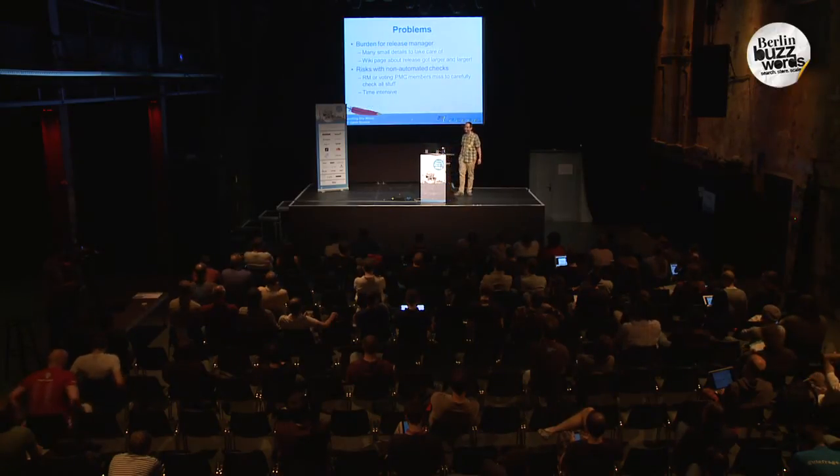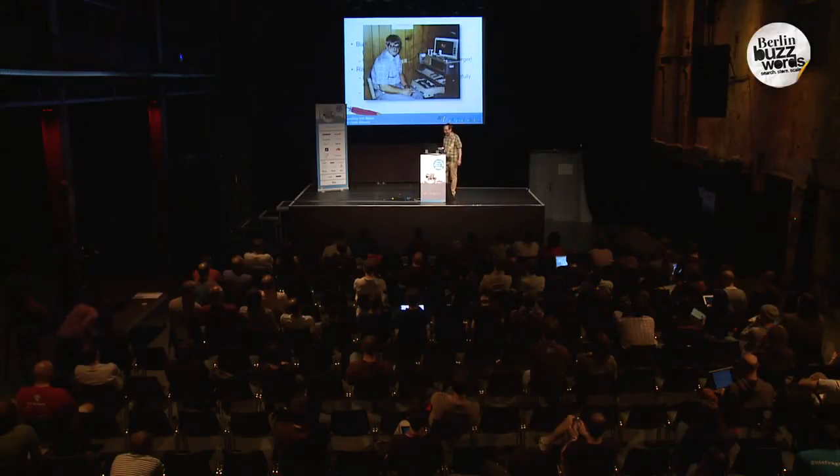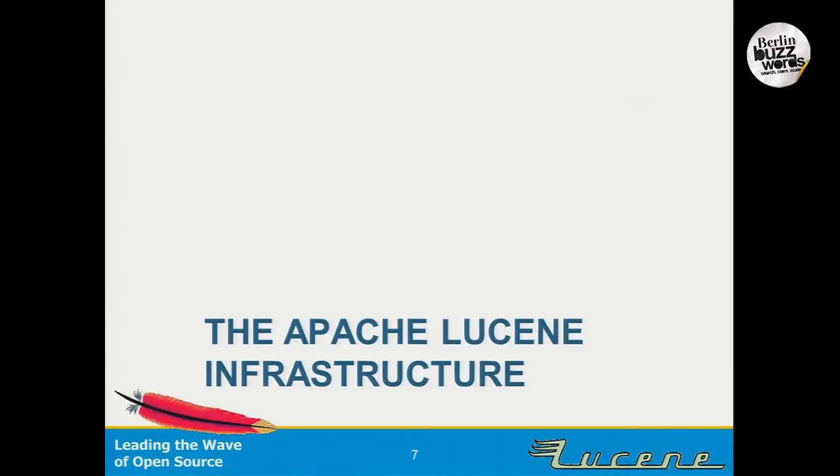The problem with that is there is a major burden for the release manager, because the list of details we have before we can release artifacts on the Apache servers and on Maven Central is very, very long. There is a wiki page about that — a lot of stuff to do, some related to how to do releases at Apache at all, but also a lot of quality checking. A lot of those tasks can also be automated, because in that case it's a hard failure, and the better thing is you would also catch those problems directly during the nightly Jenkins builds.